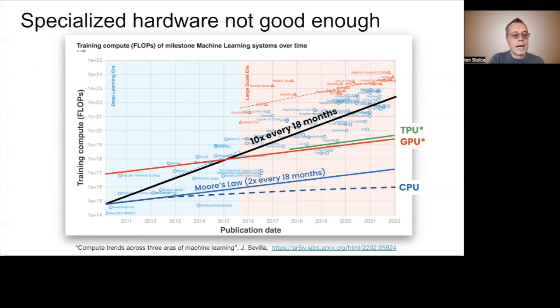However, despite the impressive increase in the performance of these specialized processors, they are still falling way short of satisfying the compute demands of training state-of-the-art machine learning models. In fact, this gap continued to double every 18 months.